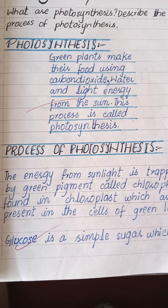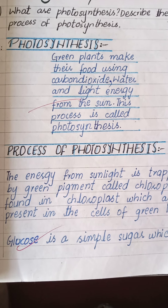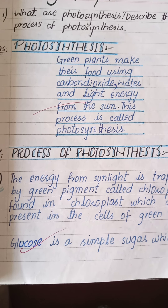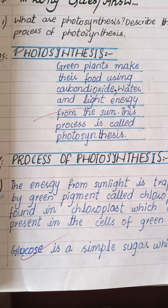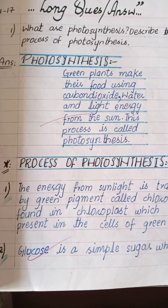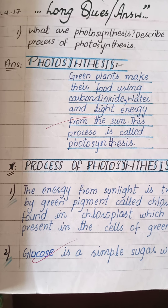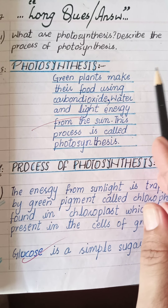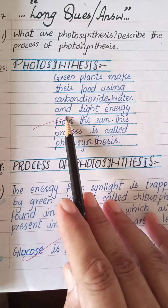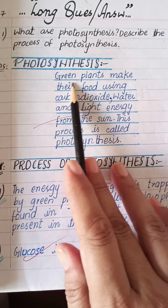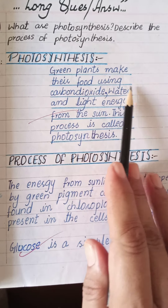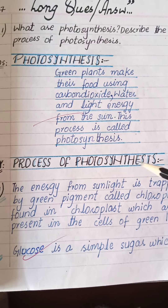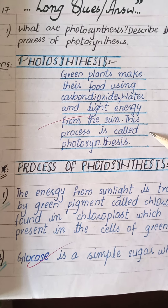Before starting the answer to question two, I will explain how you will write the definition in the biology copy. Definitions must be centralized and underlined with blue pencil. Centralized means you will write the definition in the center of the page and underline it with blue pencil. All definitions in biology, physics, and chemistry you will write like this.